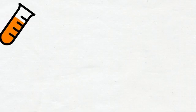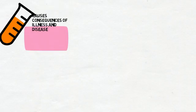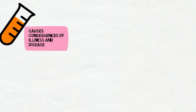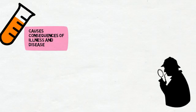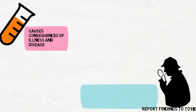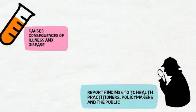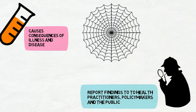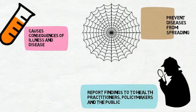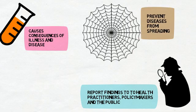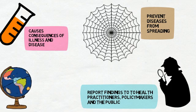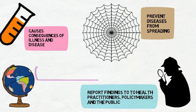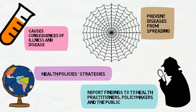Epidemiologists research the causes and consequences of illness and disease. They collect and analyze data and report their findings to health practitioners, policy makers and the public. By determining how and why diseases and illnesses occur, they help prevent them from spreading. Their research also helps in the creation of public health policies and disease management strategies around the world.